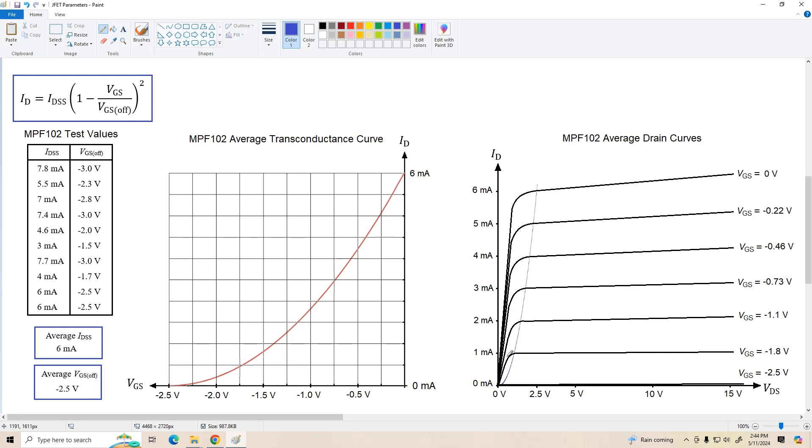And then I took that curve, scaled it appropriately, and put it on this drain curve graph. And these are the drain curves that I came up with for the typical MPF-102. So when we reference the MPF-102 in future videos, either for analysis problems or some designs of an amplifier or whatever, these are the values that I'll use to characterize the MPF-102. Now what I'd like to do next is take a look at the graphs of some of these curves for the data that I've measured.